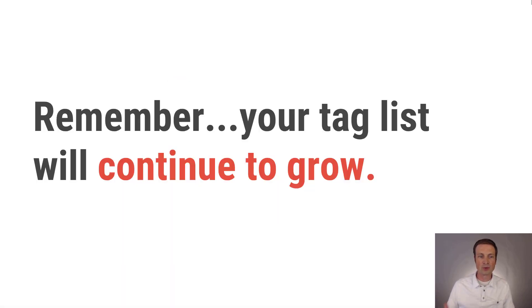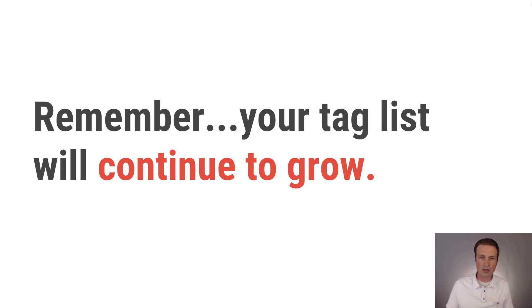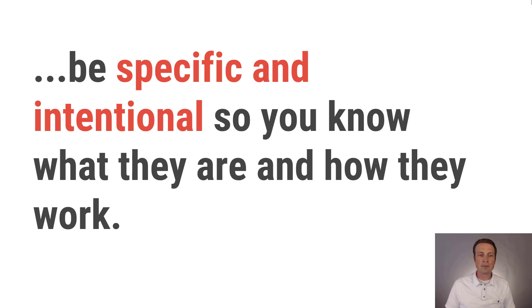As your list grows, things can get messy — and that's probably why you're watching this video. Continue to audit, follow these rules, and keep things clean and clear. Even if you leave Infusionsoft and implement another system, these same rules apply to other CRM and marketing automation platforms. The main thing is to follow a system: be specific and intentional so you know how your tags are working and what they're supposed to do. Thanks for watching — leave a comment below if you have any questions.